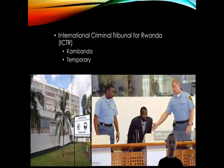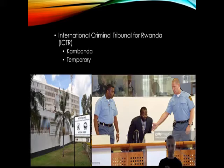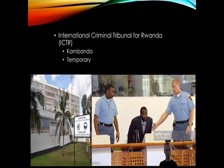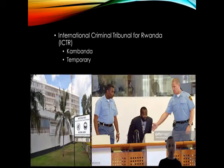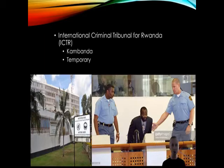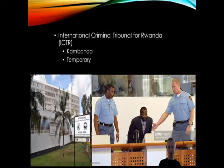Another major tribunal is the International Criminal Tribunal for Rwanda, the ICTR. This was established by the UN Security Council in 1994 and was based in Arusha, Tanzania. Charges included genocide, crimes against humanity, and violations of the Geneva Convention. It was modelled after the ICTY and indicted 93 people, including high-ranking military and government officials, politicians, businessmen, religious figures, militia leaders and media leaders. A notable conviction was of interim Prime Minister Jean Kambanda, who in 1998 pleaded guilty to genocide — the first international tribunal since Nuremberg to issue a judgment against a former head of state.